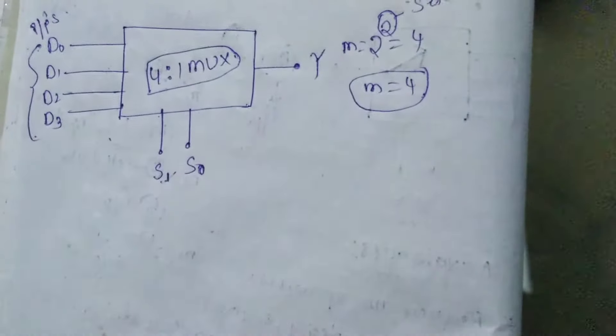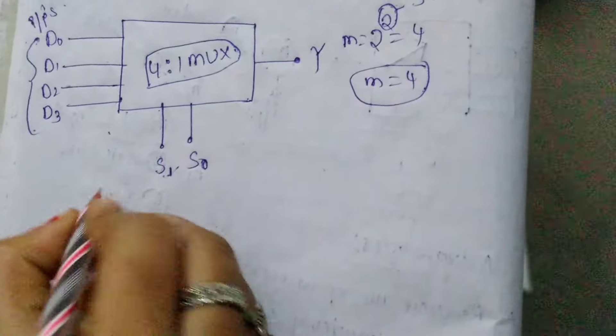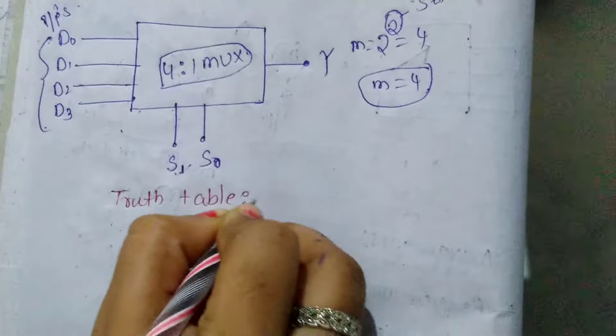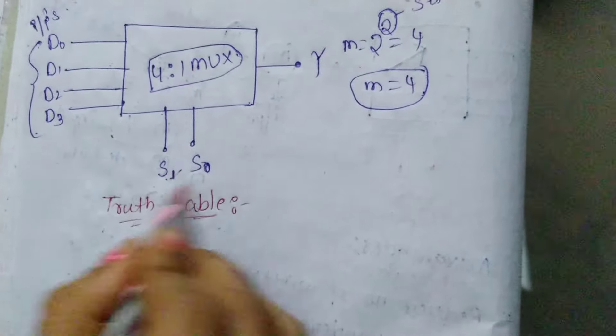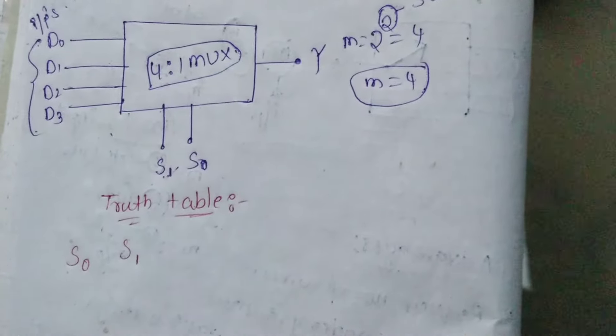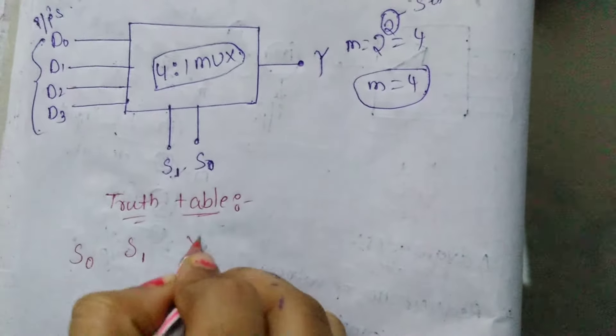Now for the 4 to 1 mux truth table. Truth table has select lines S0, S1, and output Y.